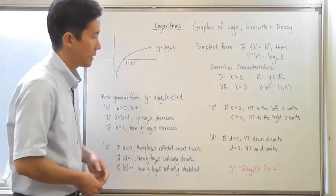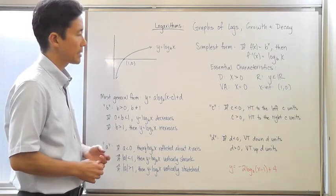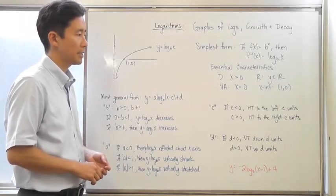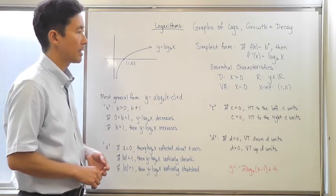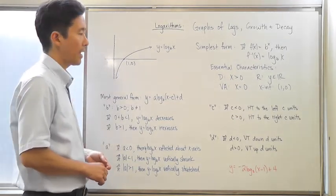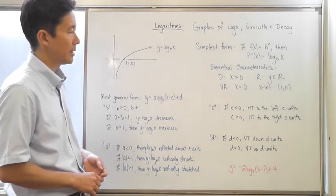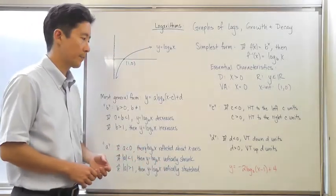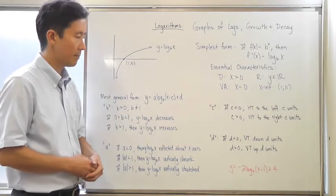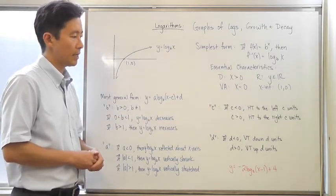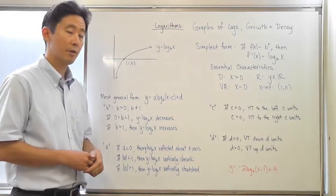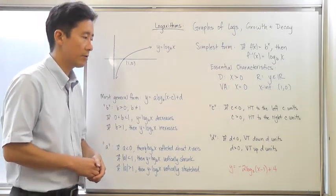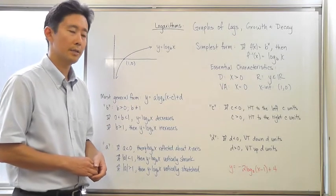Moving to c: if c is less than 0, that's going to be a horizontal translation to the left c units, and if c is greater than 0, that's going to be a horizontal translation to the right c units. Same thing for d: if d is less than 0, that's going to be a vertical translation down d units, and if d is greater than 0, that's going to be a vertical translation up d units.